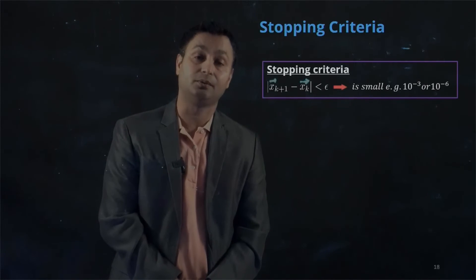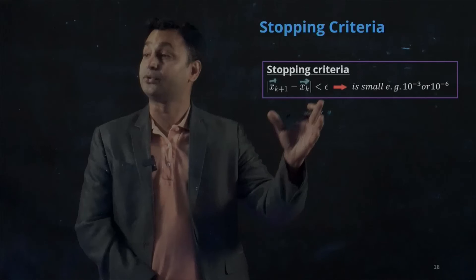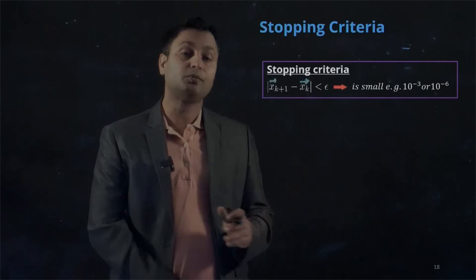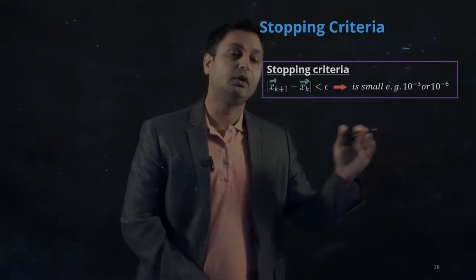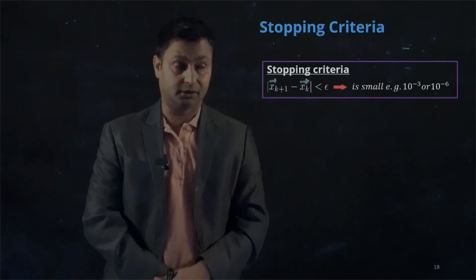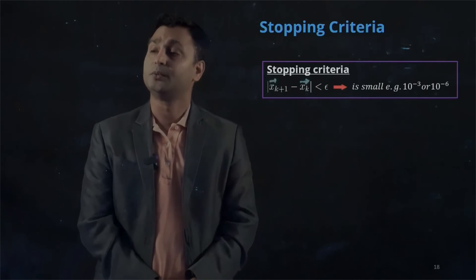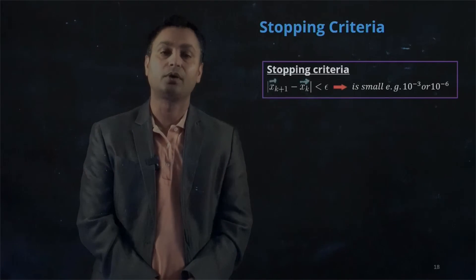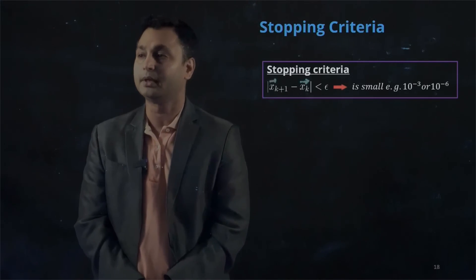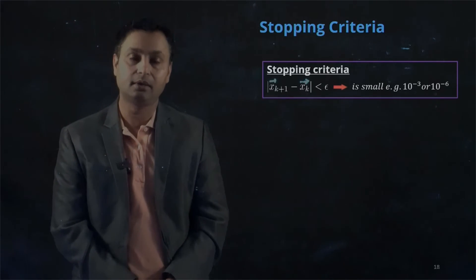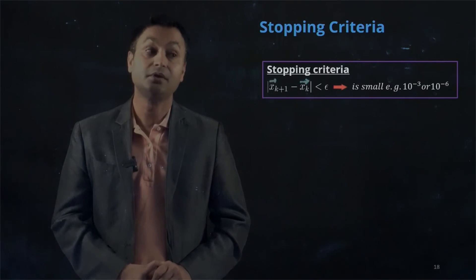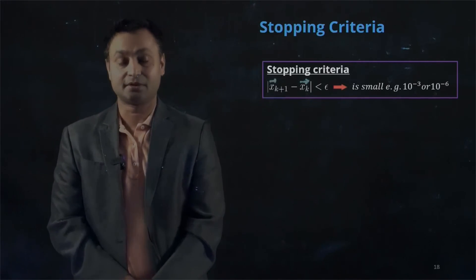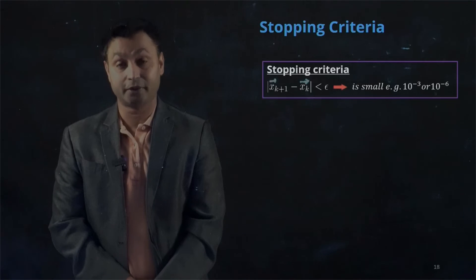Until the stopping criteria is satisfied, we continue iterative loops moving from x1 to x2 to x3 and so on until we reach the optimum. Let's now move on to the second important algorithm for this class — Newton's method — which is a modification of the Newton-Raphson method for multiple variables.